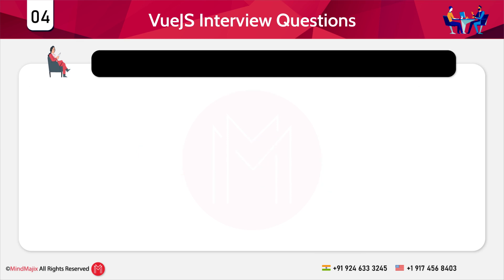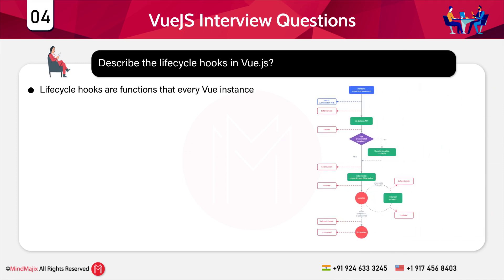The next question is: describe the lifecycle hooks in Vue.js. Lifecycle hooks are functions that each and every Vue instance runs through. Each Vue instance has eight lifecycle hooks: beforeCreate, created, beforeMount, mounted, beforeUpdate, updated, beforeDestroy, and destroyed.